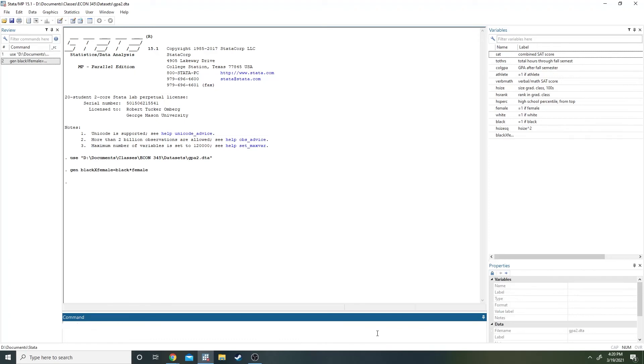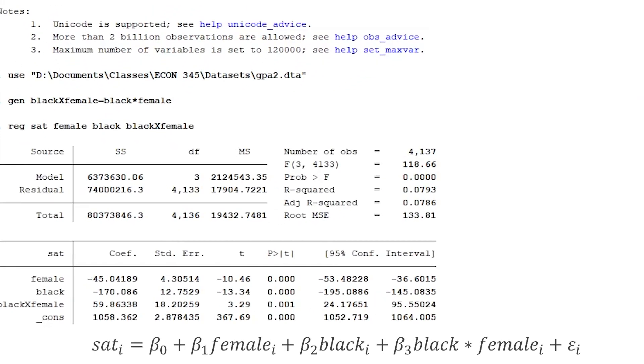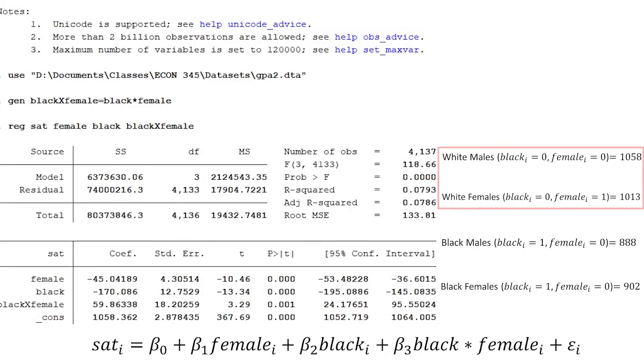Interaction terms are especially useful and easier to interpret when they're combined with binary variables. For example, going back to our SAT dataset, we may want to see if there's an interaction between the effects of race and gender on SAT scores. So, we'll create a variable equal to the product of our female and black indicator variables and run this regression. What are these results telling us? Well, we can use these three coefficients to find the average SAT scores for white males, white females, black males, and black females. Doing this, we can see that while white males score higher on the SAT than white females do, black females actually score better than black males. The gender gap goes in the other direction, which we would never know without our interaction term.